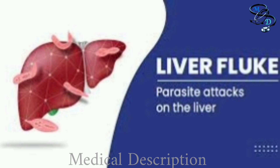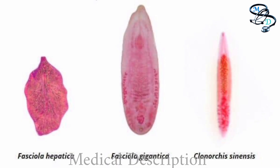Flukes, especially the liver flukes, are parasites that can infect humans and cause liver and bile duct disease. There are two families of liver flukes that cause disease in humans. Number one is Opisthorchiidae, which includes the species Clonorchis and Opisthorchis, and the second one is Fasciolidae, which includes the species Fasciola.